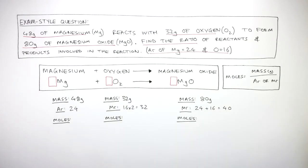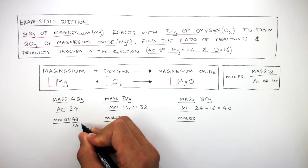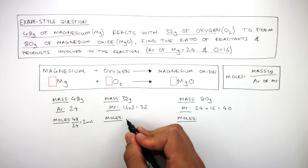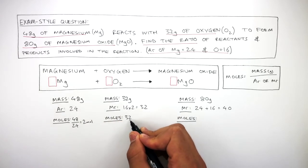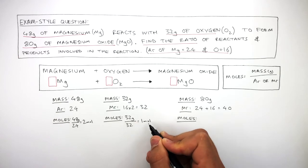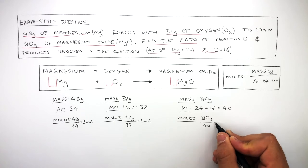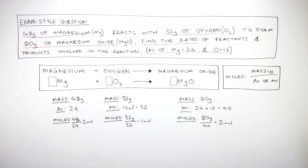We then calculate the moles of each substance. So 48 grams divided by 24 equals 2 moles of Mg. 32 grams divided by 32 equals 1 mole of oxygen. And 80 grams divided by 40 equals 2 moles of magnesium oxide.